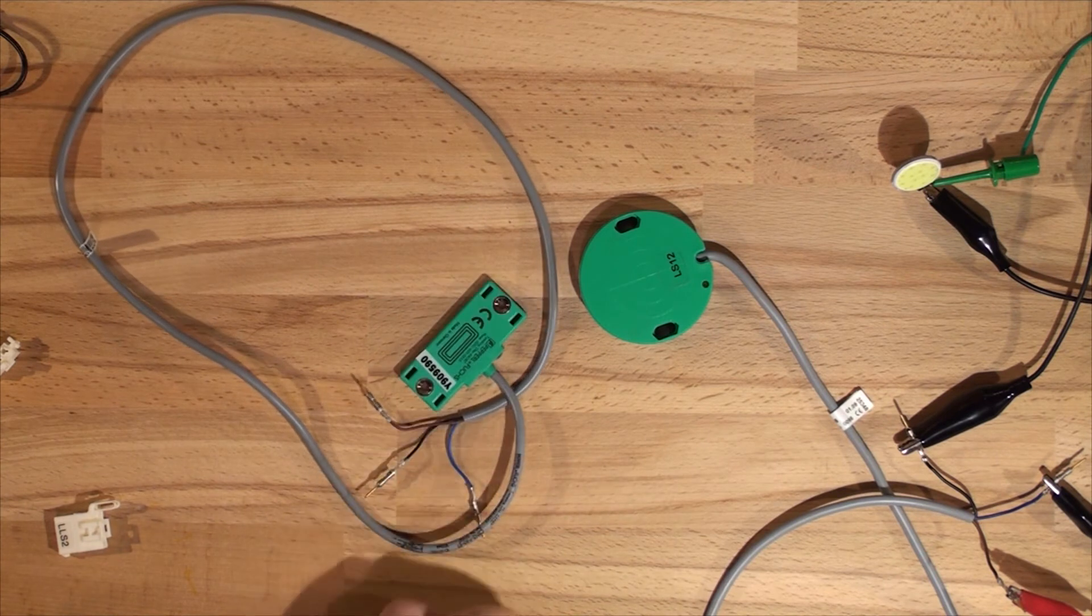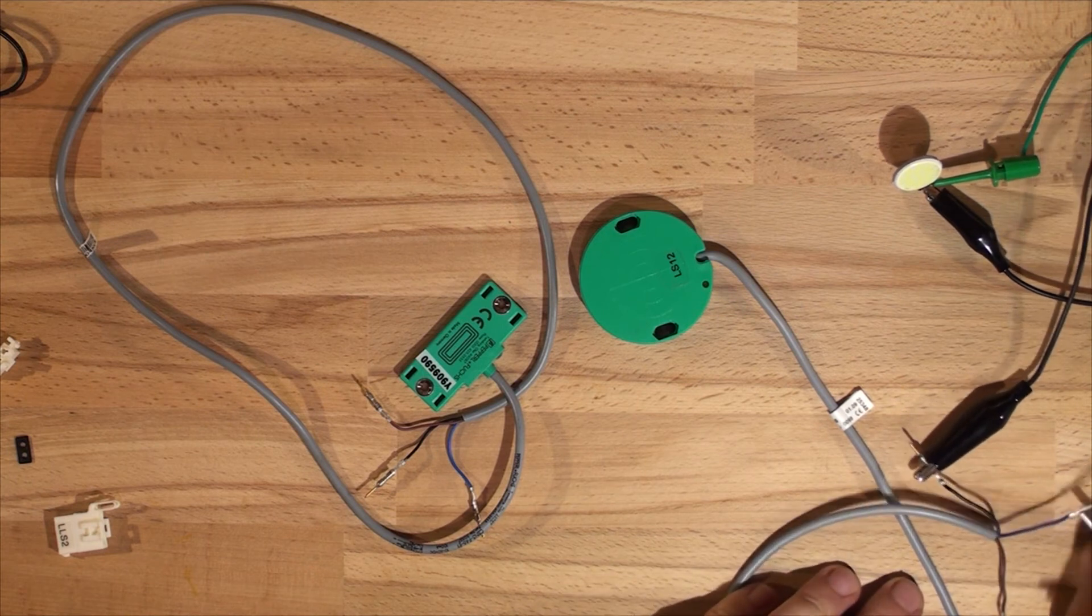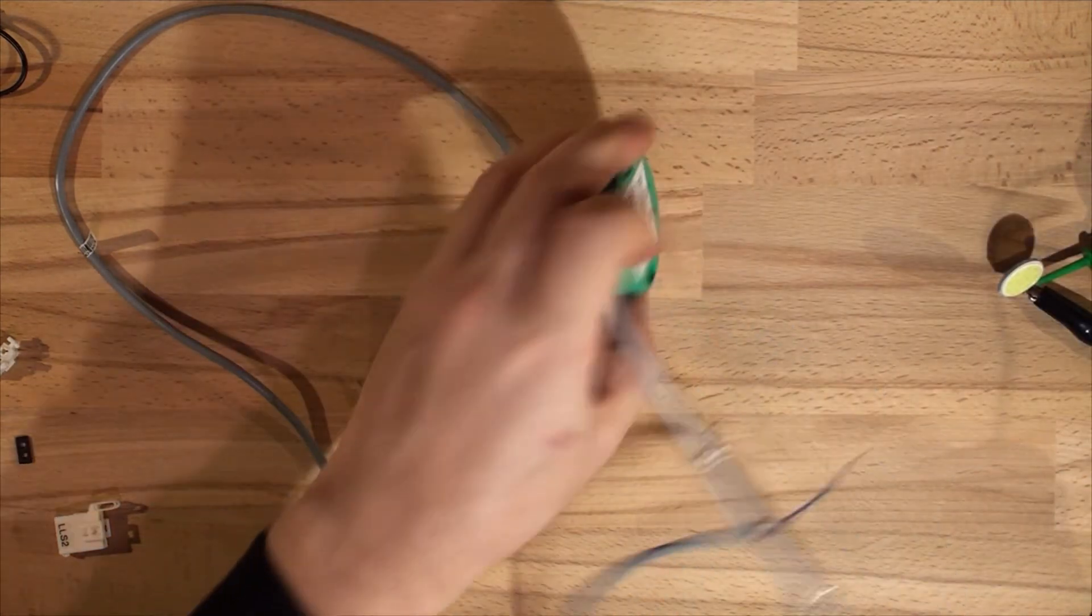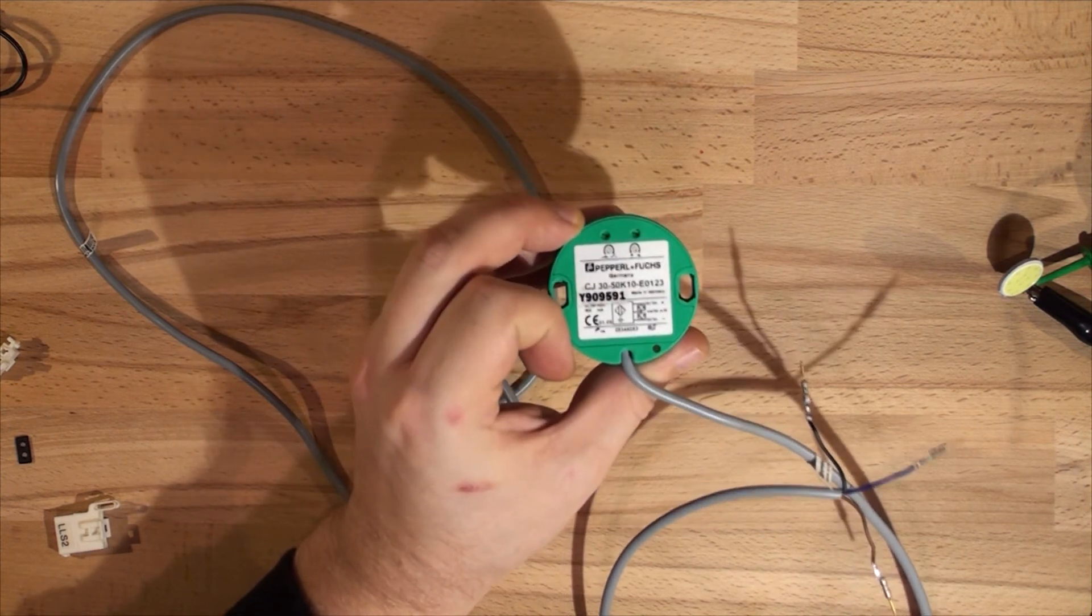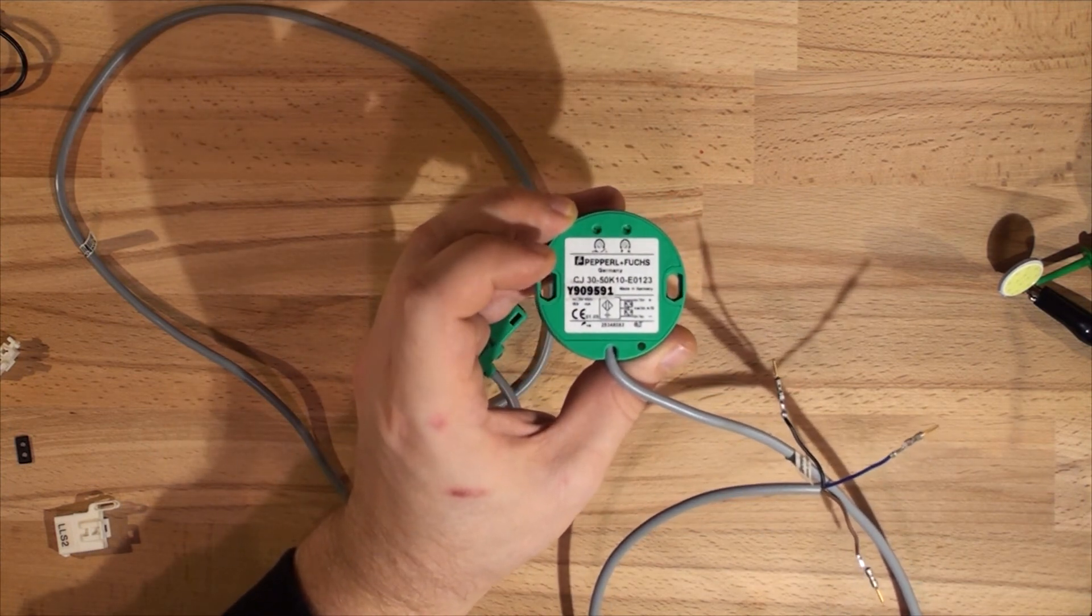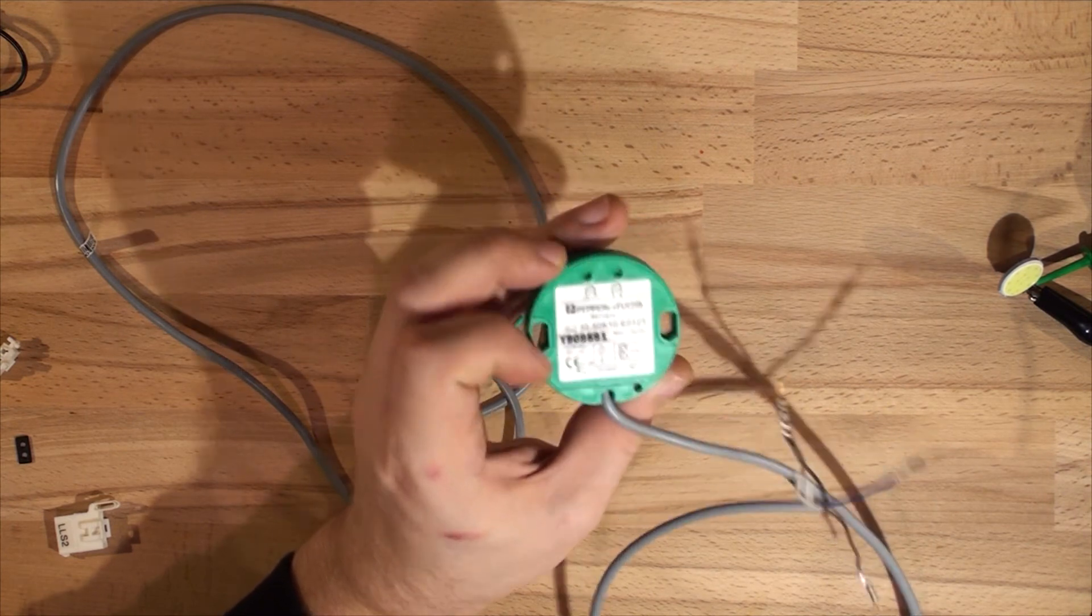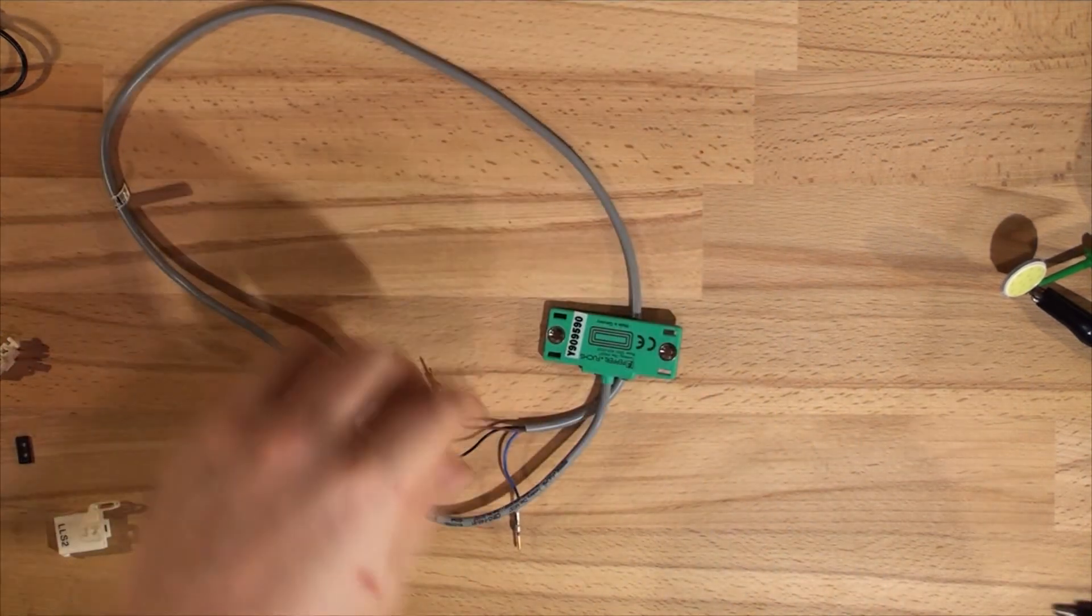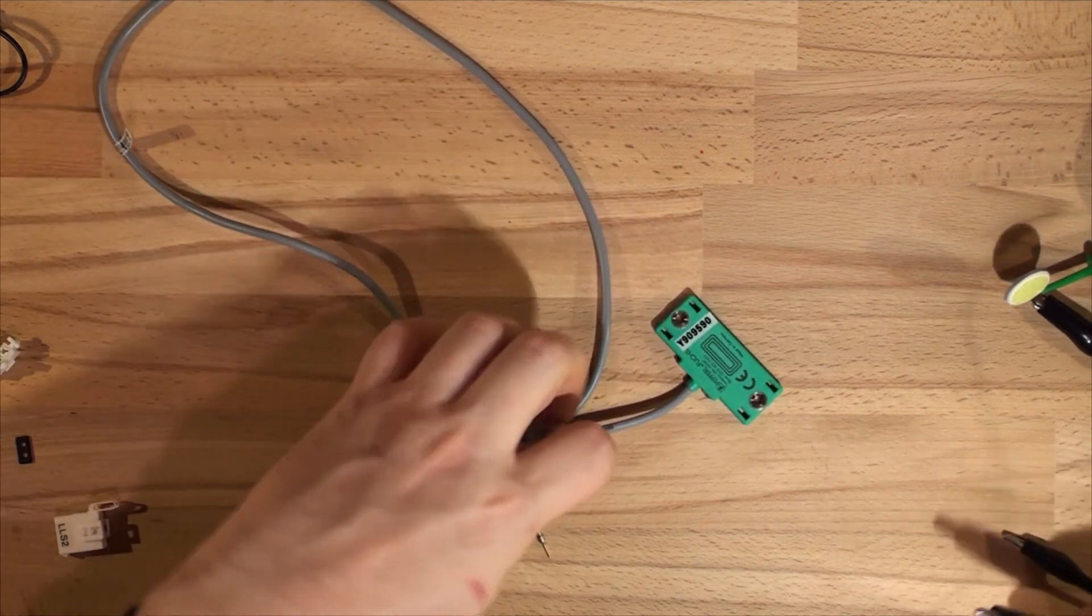So here's another one that was used for liquid detection as well. Let's plug this one in and have a look at what this one is capable of, because it doesn't have any adjustment. It does have an indicator LED. Here's the serial number if you'd like to check it out, and model number. That's the model number: CJ3050K10E0123. They're around, I think, 70. So now let's have a look at that little one which has got screw mounting and see how sensitive that is.